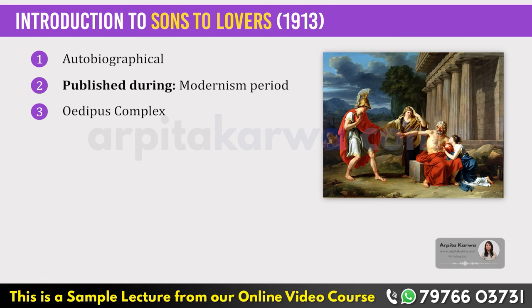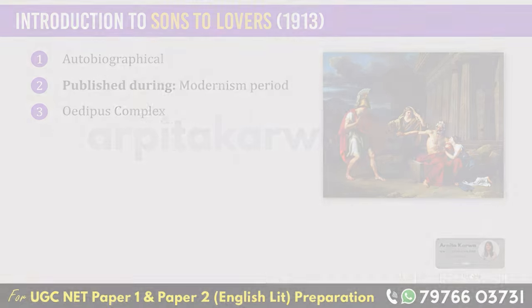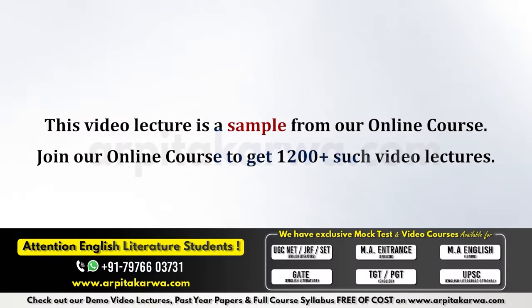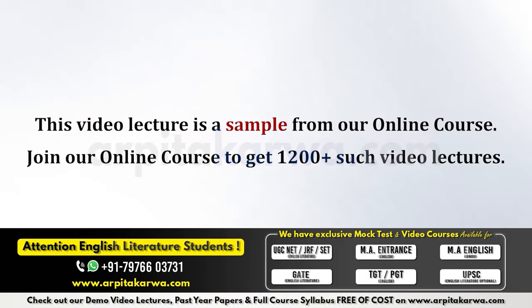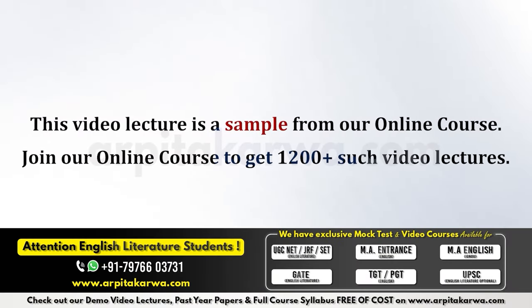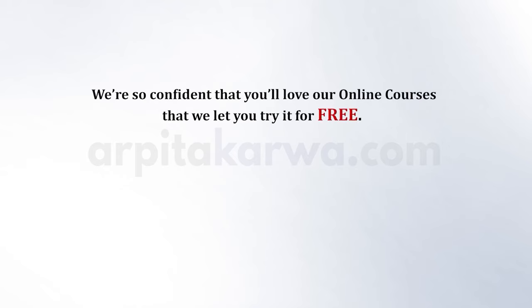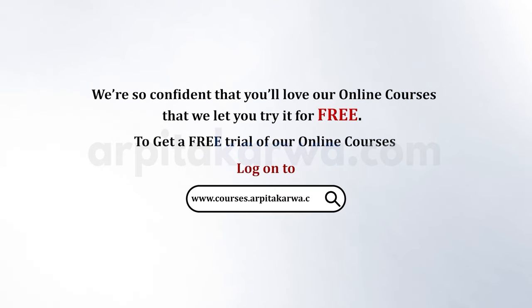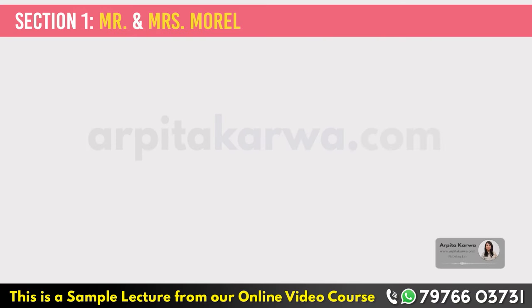We see elements of the Oedipus complex as we encounter Mrs. Morrill's relationship with her son Paul. Now let's get to know the story in a bit more detail.